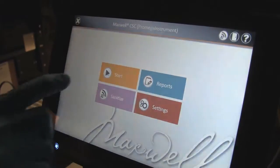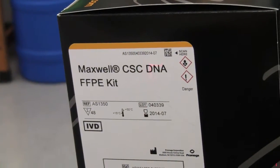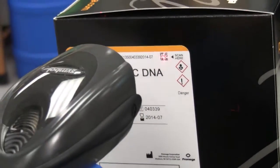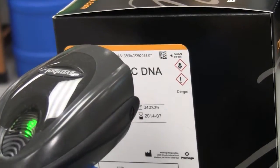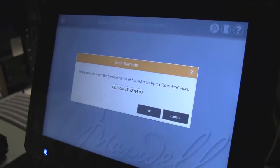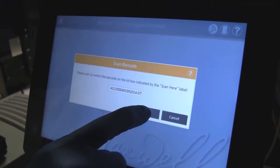Select Start on the home screen. Scan or enter the method barcode on the Maxwell CSE DNA FFPE kit label to automatically select the method to be run.